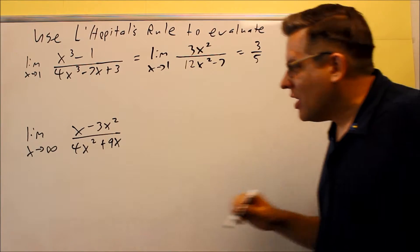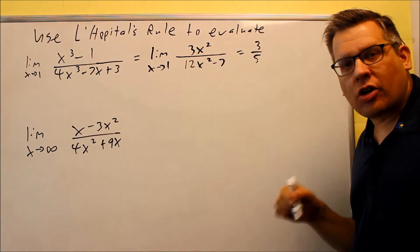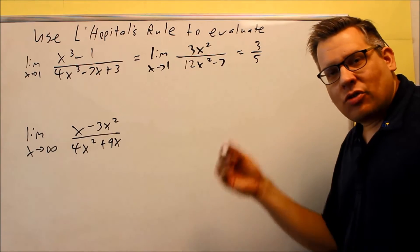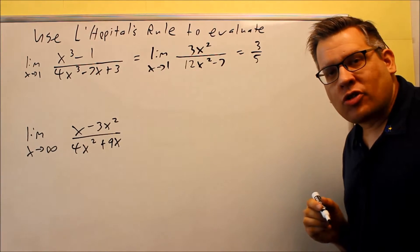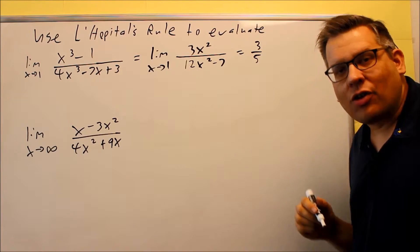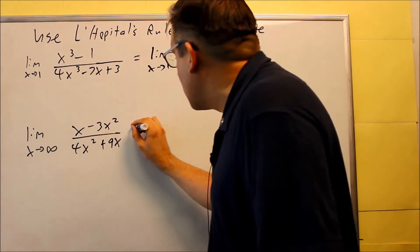Now it works exactly the same way, you're going to keep on going until you don't have one of those indeterminate forms anymore. Either you don't get zero over zero or you don't get infinity over infinity. So let's try that on this one.